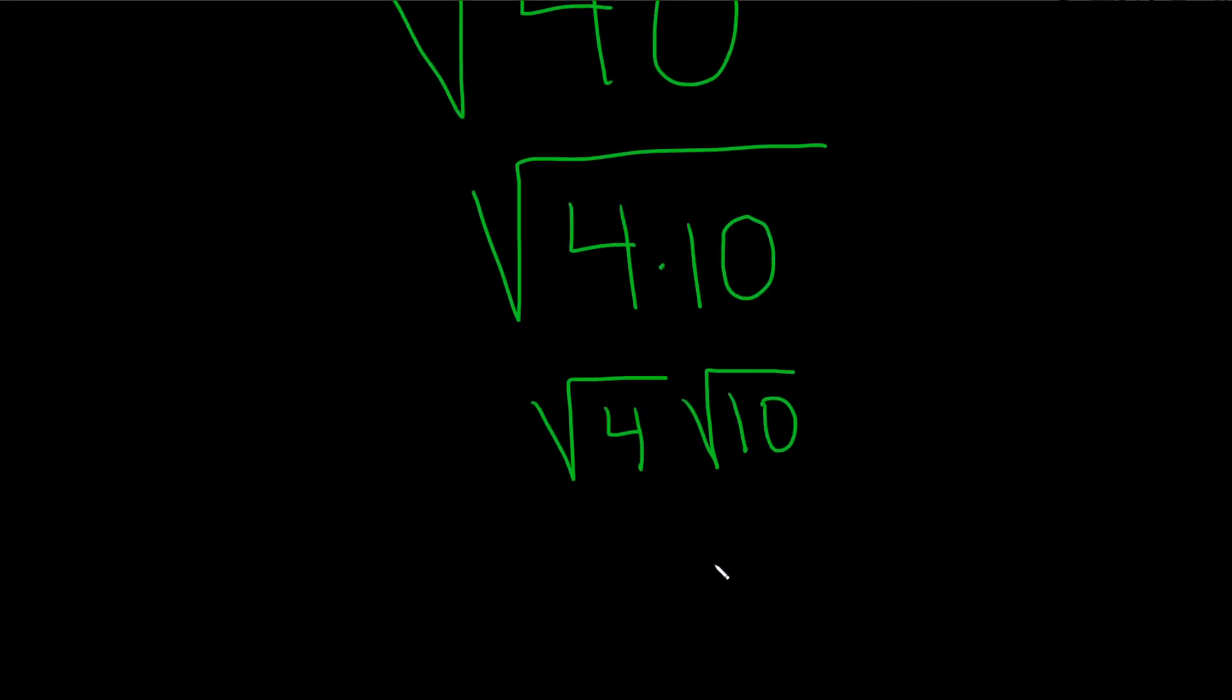And then we know something about the square root of 4. It's just 2. So this is 2 square root of 10. And that would be the same thing as the square root of 40.